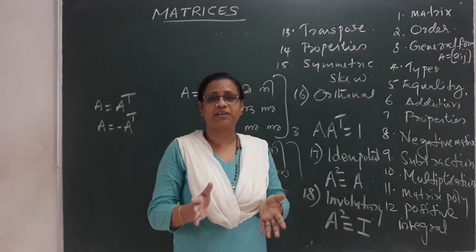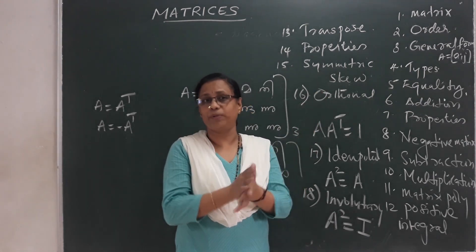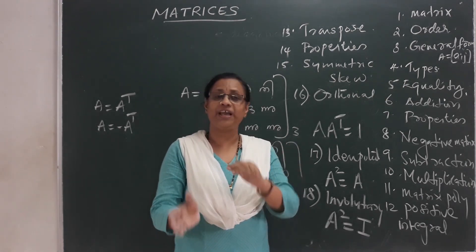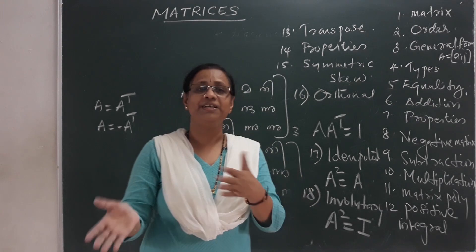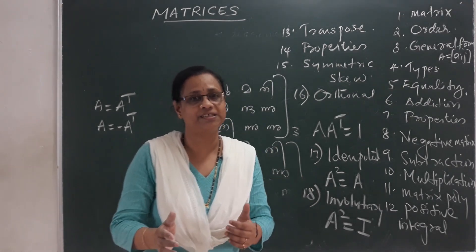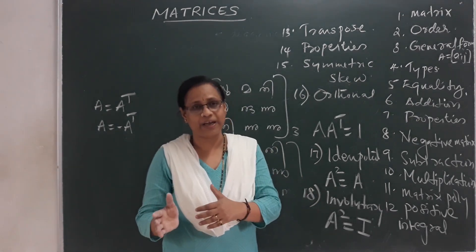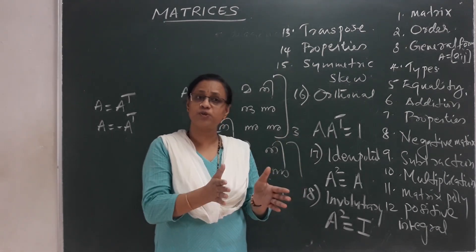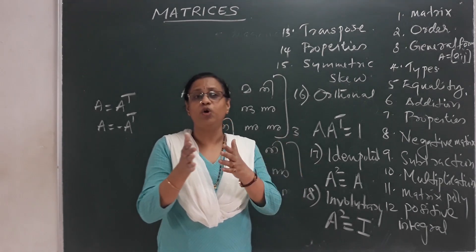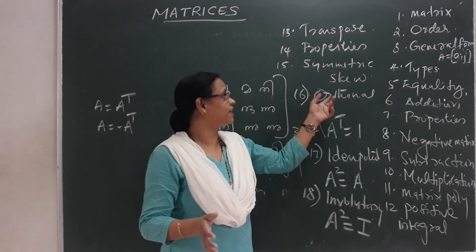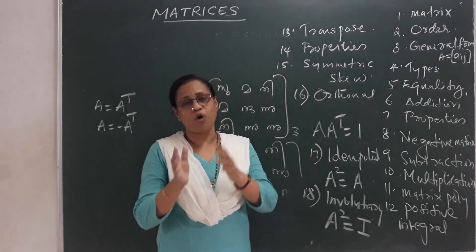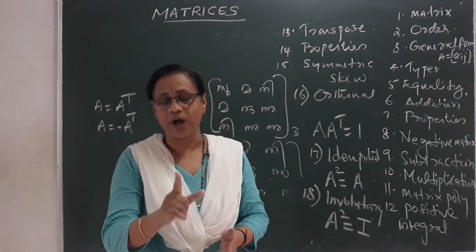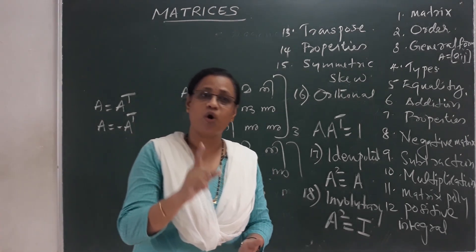Symmetric matrix: if you change the transpose of a matrix and the result remains the same, that means A is equal to A Transpose. Skew-symmetric matrix: A is equal to minus A Transpose. Orthogonal matrix: A into A Transpose is equal to the identity matrix.